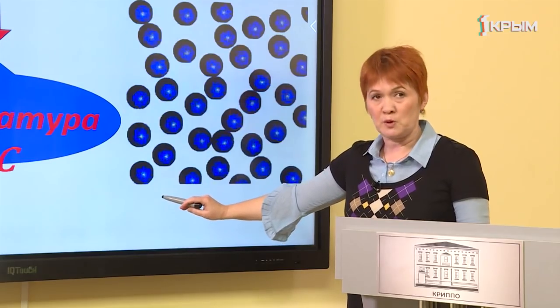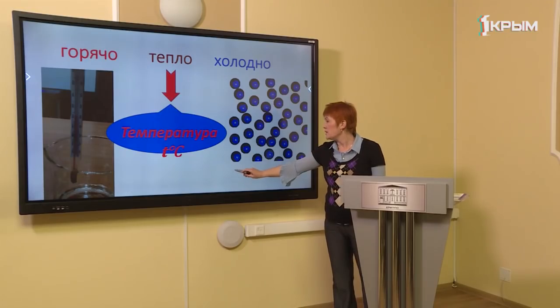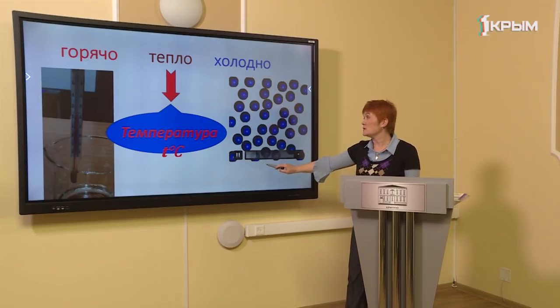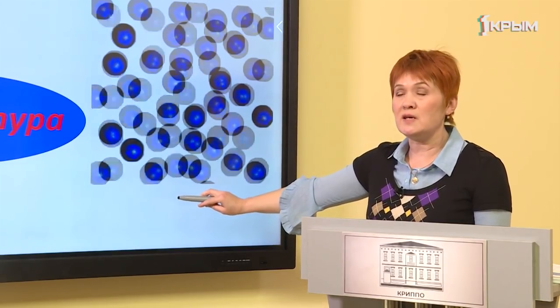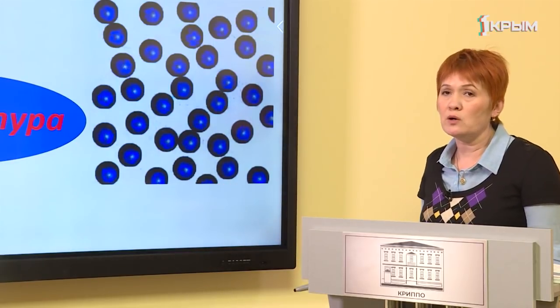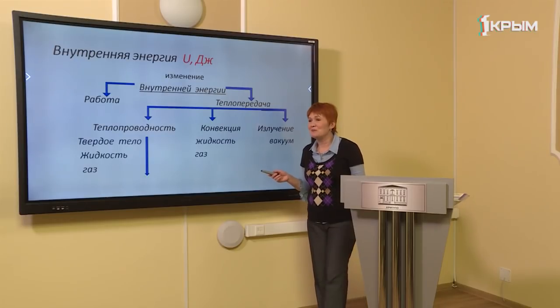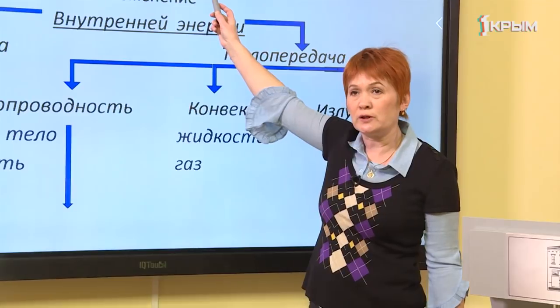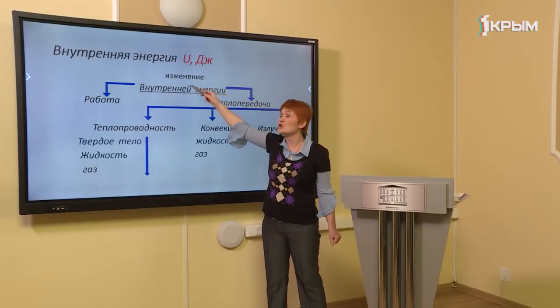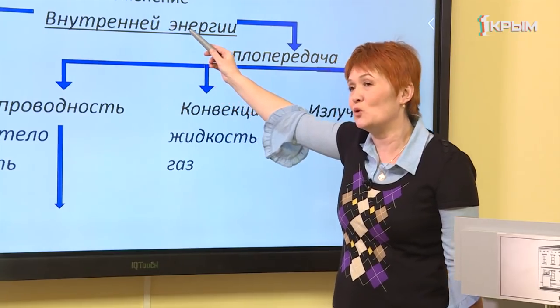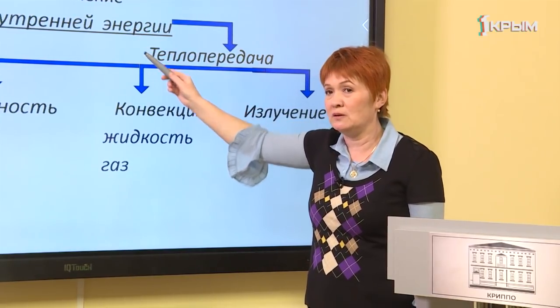С чем связана температура? Все вещества состоят из молекул, которые хаотично движутся и взаимодействуют. Чем выше скорость движения молекул, тем выше температура тела. Внутренняя энергия — это то, что спрятано в глубине каждого вещества. Внутренняя энергия — это энергия движения и взаимодействия частиц, из которых состоит вещество. Обозначается буквой U, измеряется в джоулях, как и любая энергия.